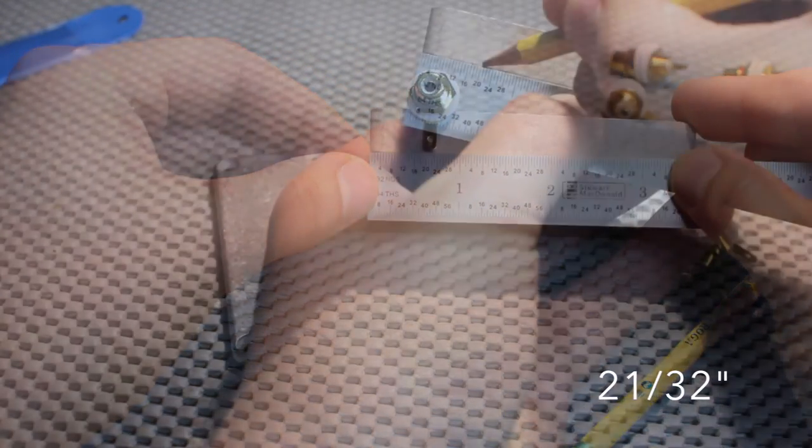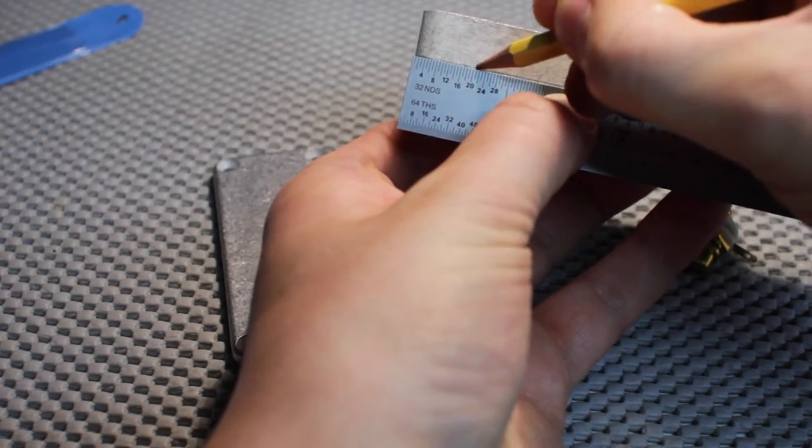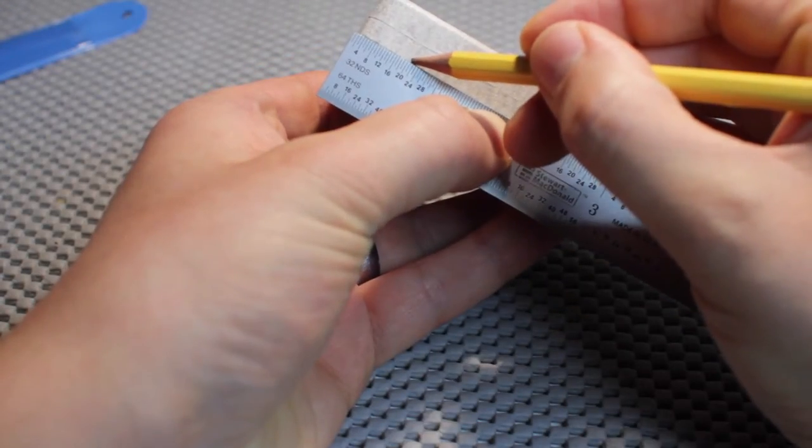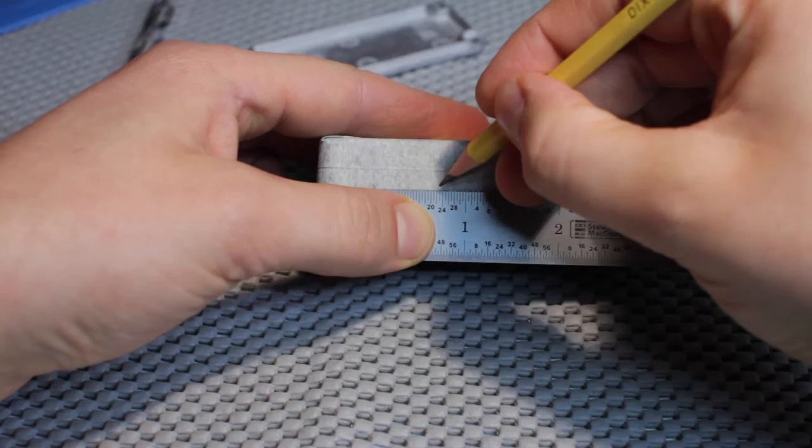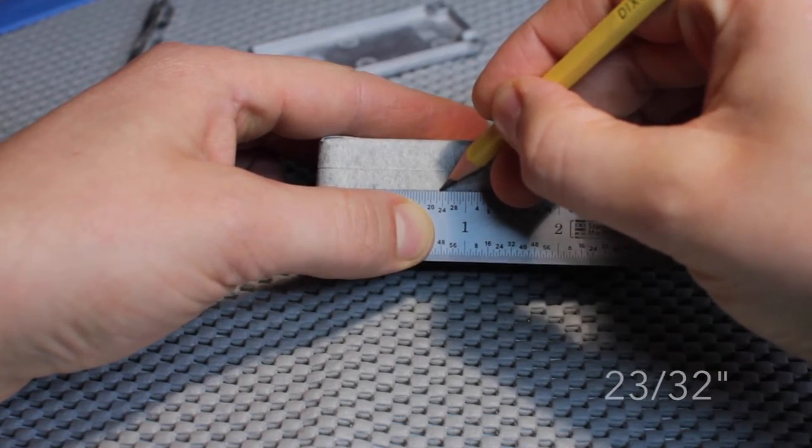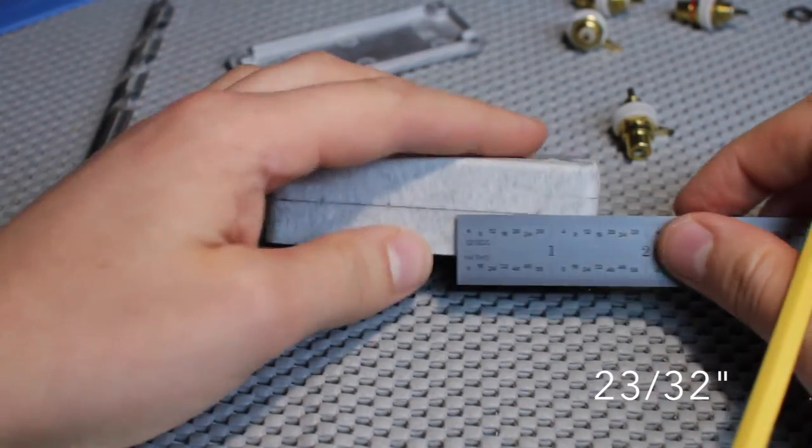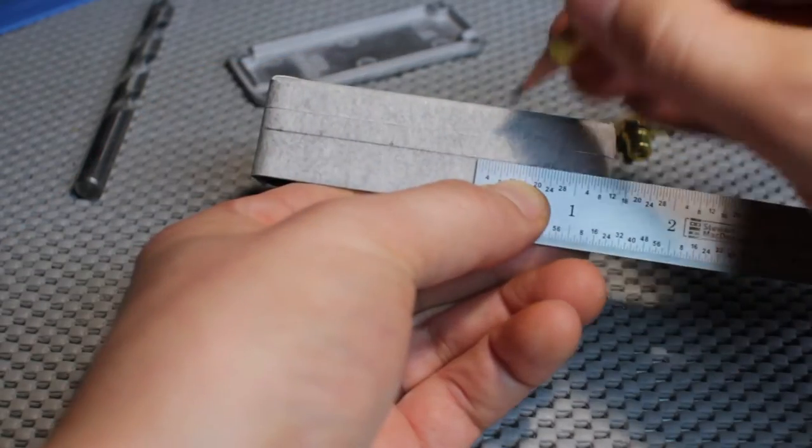I decided on 21 32nds. I mark it, then I mark it on the other side, and then I mark the locations for the inside two jacks. I decided on those being 23 32nds from the outside jacks.